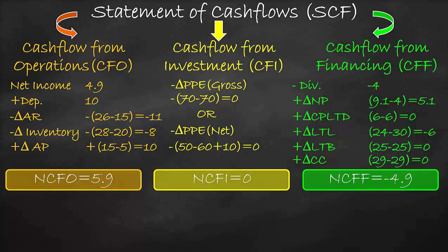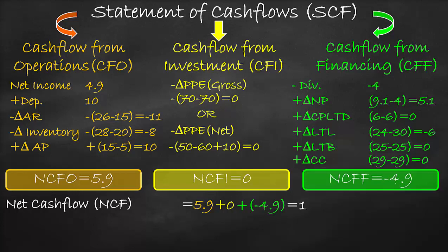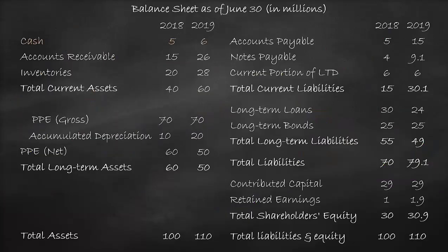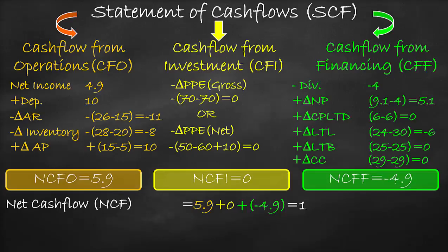Finally, net cash flow is the sum of net cash flows from operations, investment, and financing: 5.9 million plus zero minus 4.9 million, which equals $1 million. Net cash flow shows the change in cash between two consecutive years. If you check the difference in the cash item between 2019 and 2018 — 6 million minus 5 million — you get $1 million, exactly the same as our calculated net cash flow, confirming our calculation is correct.